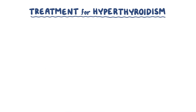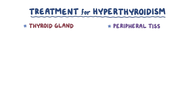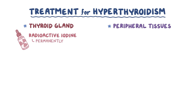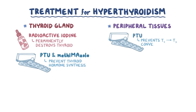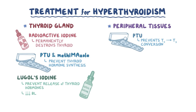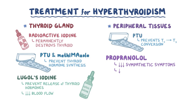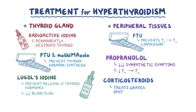As a quick recap, treatment for hyperthyroidism includes medications that target the thyroid and those that target peripheral tissues. Radioactive iodine offers a permanent solution since it destroys the thyroid gland. PTU and methimazole prevent thyroid hormone synthesis, and PTU also prevents conversion of T4 into T3 peripherally. Lugol's iodine prevents the release of thyroid hormones and can decrease blood flow to the thyroid. In the peripheral tissue, propranolol reduces the sympathetic symptoms of hyperthyroidism and decreases the conversion of T4 into T3. Corticosteroids are used to treat Graves' ophthalmopathy.